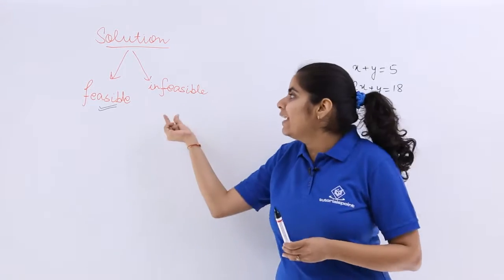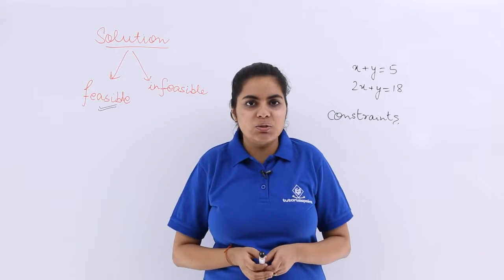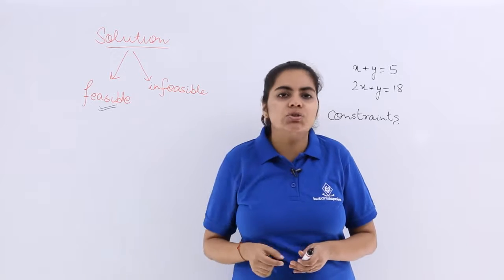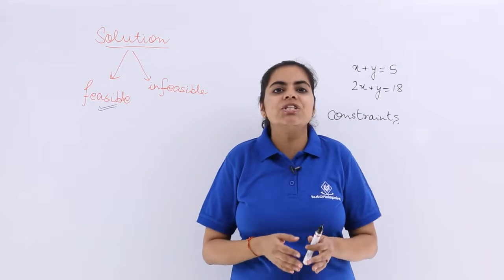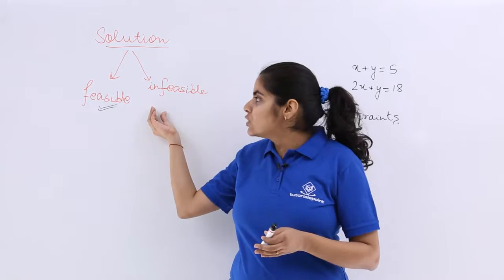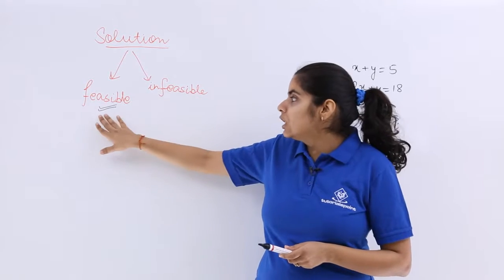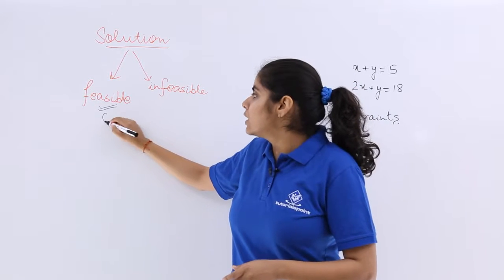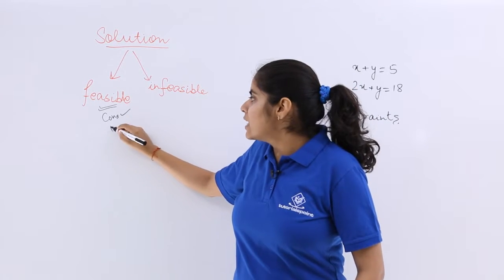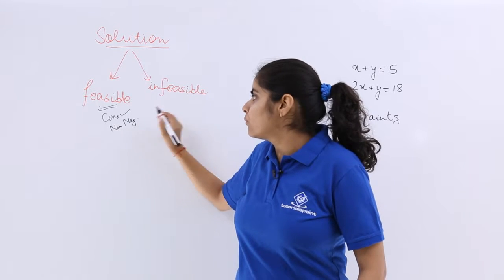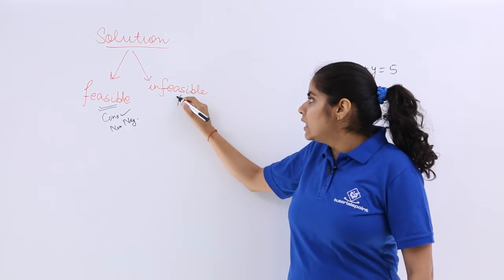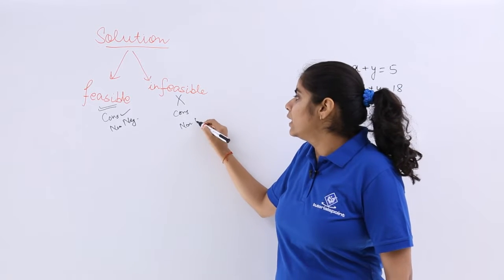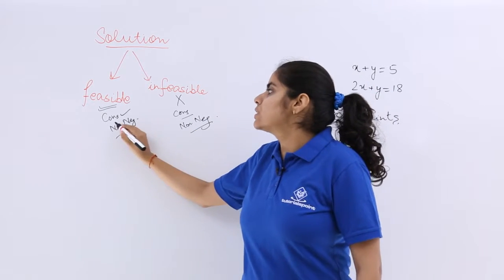Next you have infeasible solution. The infeasible solution would be when there is no such variable or set of variables which satisfy the constraints and the non-negative restrictions. So here you have all the variables or the set of variables satisfying the constraints as well as the non-negative restrictions in the feasible case. But here in infeasible case there is no such thing which satisfies the constraints or the non-negative restrictions.